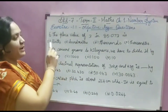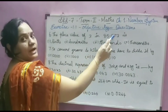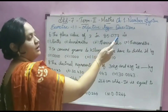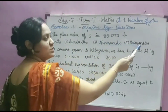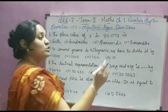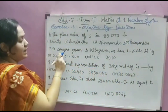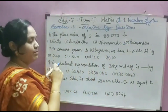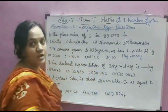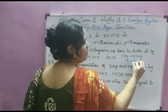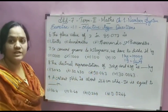Objective type questions now. The place value of 3 in 85.073: 0 is in the tenths place, 7 is in the hundredths place, and the place value of 3 is thousandths. The answer is thousandths. Next: to convert grams to kilograms, we have to divide by — 1 kilogram equals 1000 grams, so 1 gram equals 1/1000 kilogram. Therefore we divide by 1000. The answer is 1000.